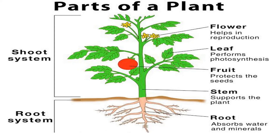Do you know kids, the first part of the plant is the root. Root absorbs water and minerals. The second one is the stem — stem's job is to support the plant. The third one is fruit — it protects the seed. Photosynthesis is the process of making food for plants. Just like your mother makes food in the kitchen, the kitchen of the plant is its leaf.